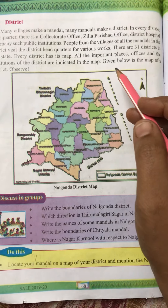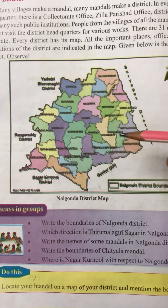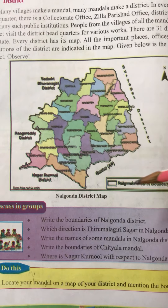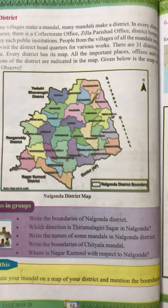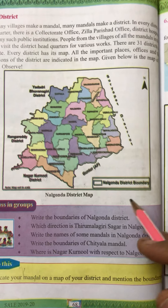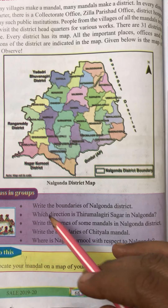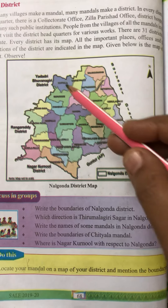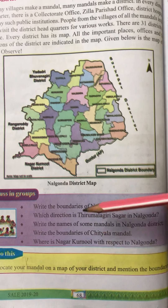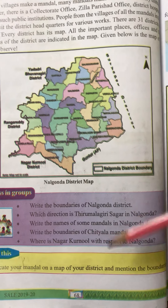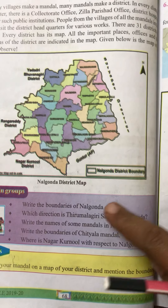The map given below is the map of a district — observe. Here is a map picture of Nalgonda district. In your homework book, write the boundaries. You can observe the Nalgonda district boundaries on the same image. I got 5 questions; I will send you the picture.